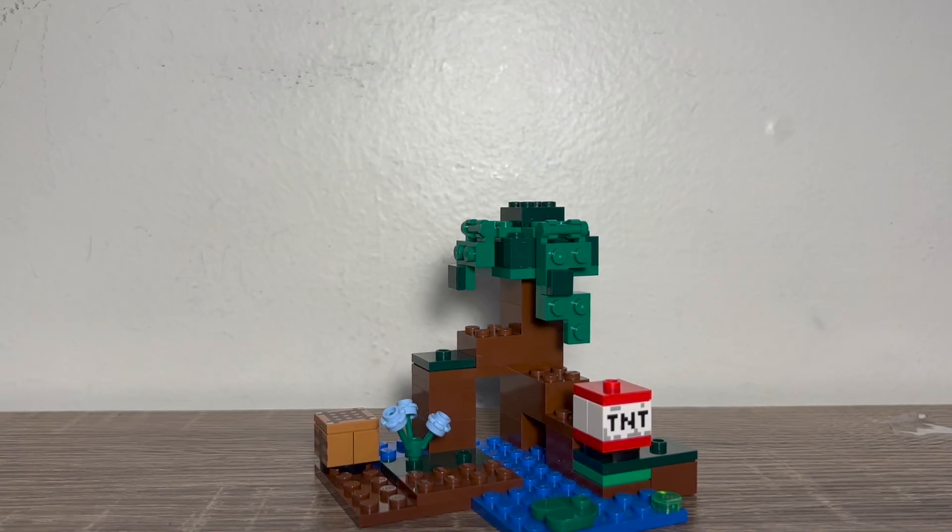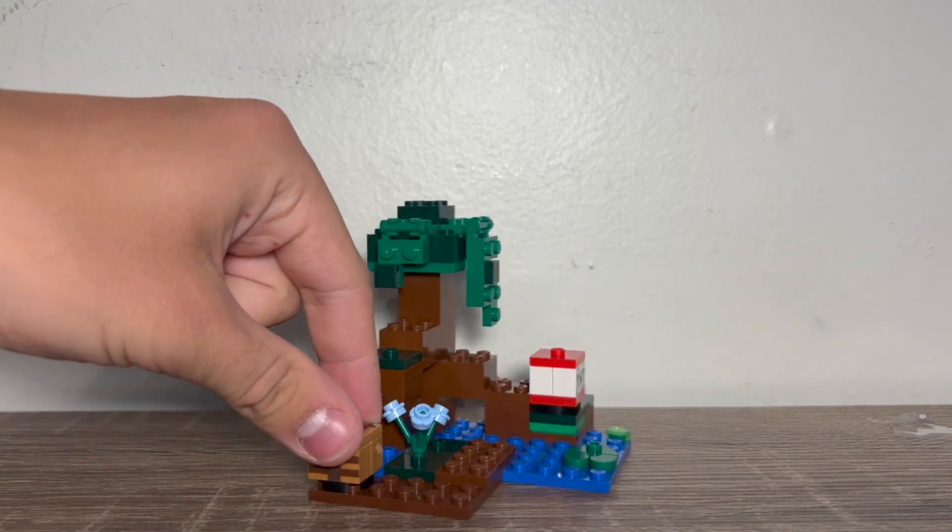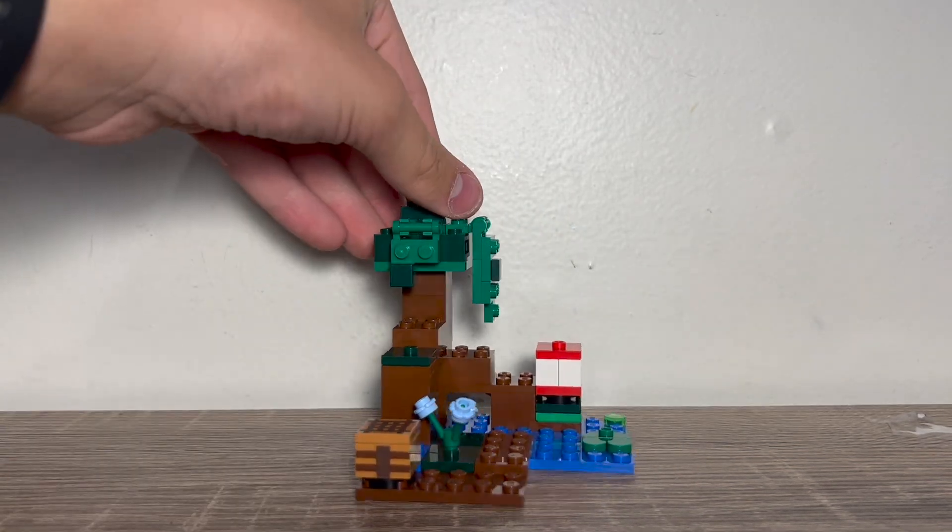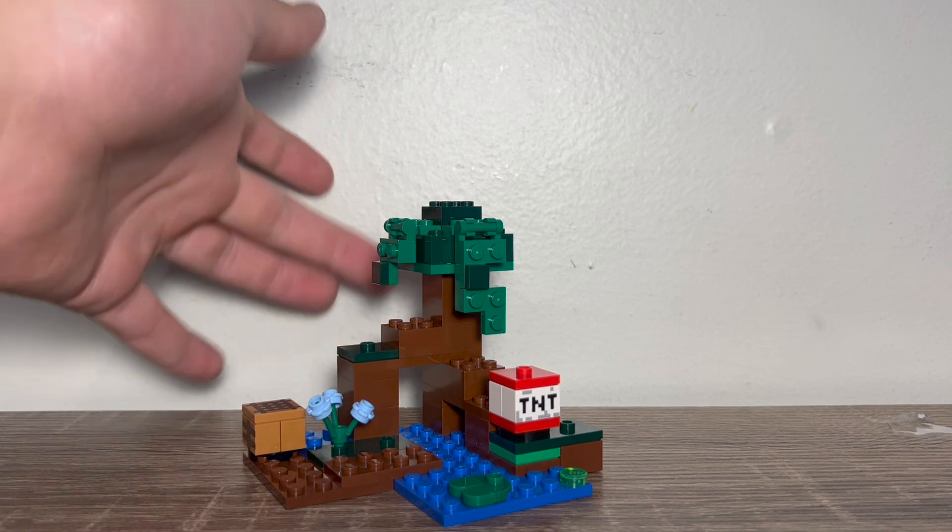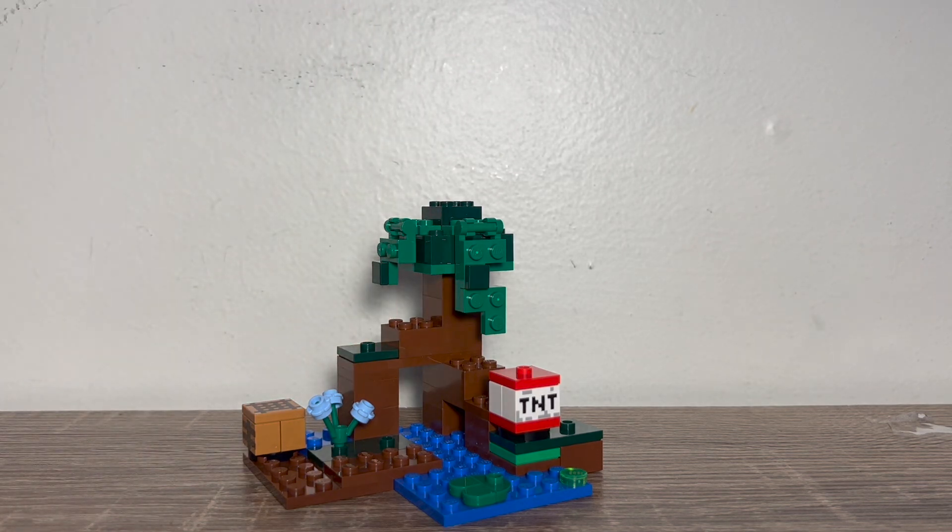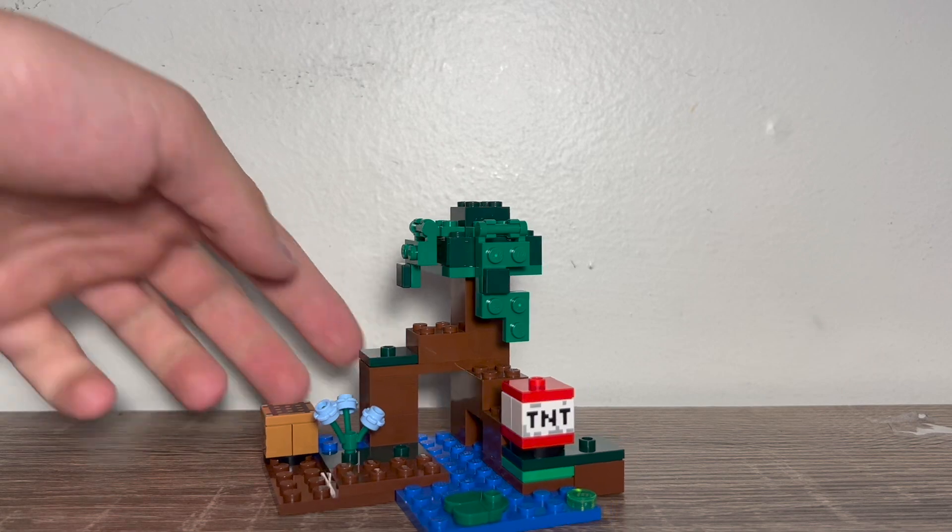So for the build, we get this really small mangrove swamp build. We have a crafting table over here, some flowers right here. The mangrove tree right in the back, which looks pretty good for a mangrove. I like that there's all those holes in there and stuff like that.